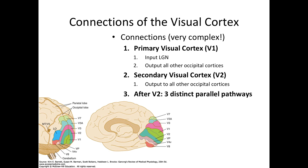In the 1960s it was thought that visual information was hierarchically organized, where information goes first into V1, then into V2, then V3, V4, etc. It was thought that each of these areas performed an additional processing step to what was done in the previous region. However this view is way too simplistic, and instead there is a distributed hierarchical process with multiple parallel and interconnecting pathways at each level.